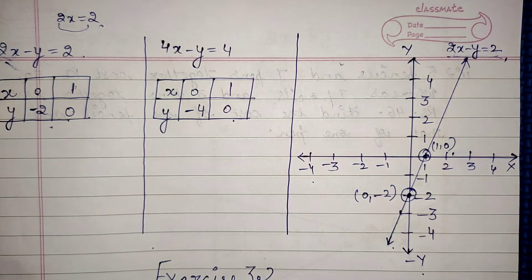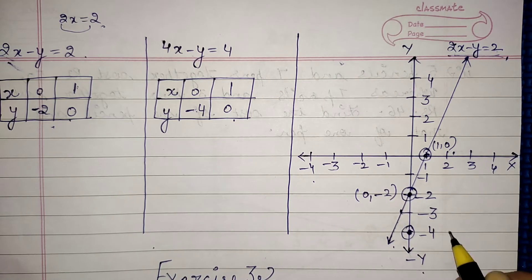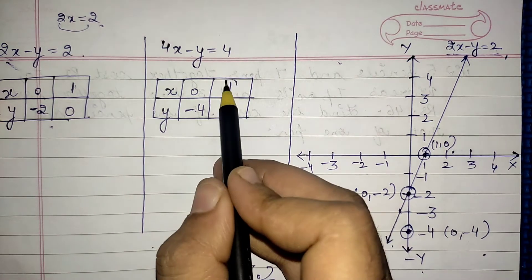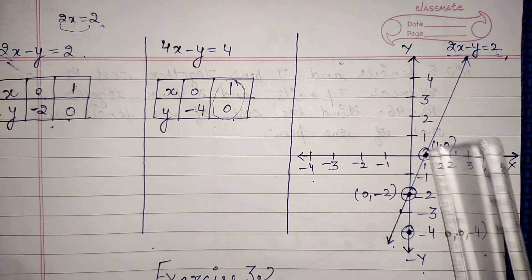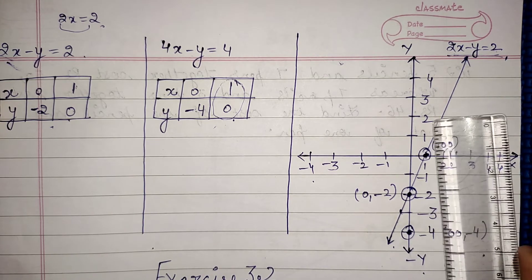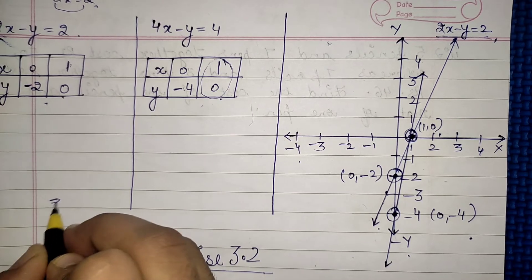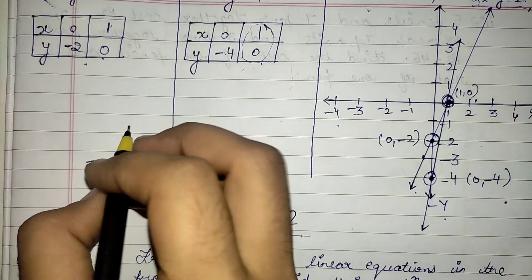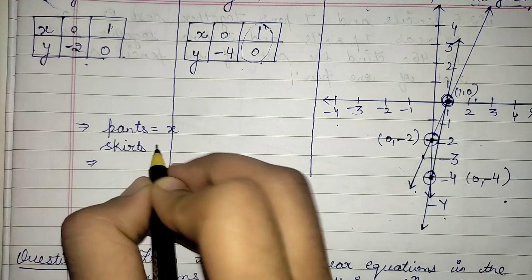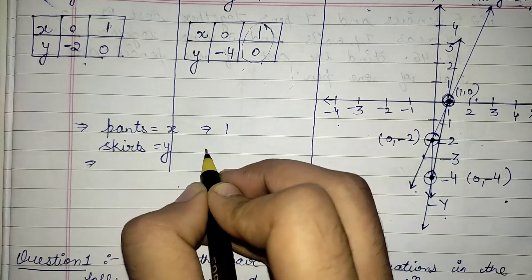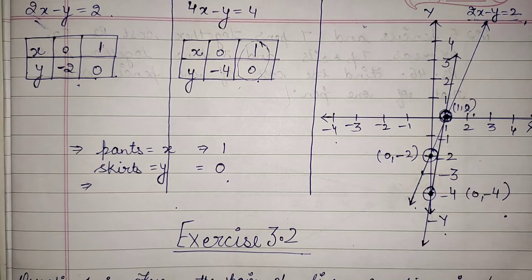For the second line 4x − y = 4: if x = 0 then y = −4, giving point (0, −4); if y = 0 then x = 1, giving point (1, 0). Join these two points to get the second line. Both lines intersect at the point (1, 0), meaning the number of pens purchased is 1 and the number of skirts is 0.